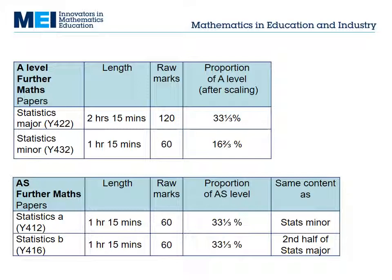This is how the exams work. The minor option can be taught in Year 12 alongside AS Maths. The major option is probably best taught over two years. If you want to enter for AS Further Maths, there's an AS unit with the same content as Statistics Minor, and another one with the same content as the second half of Statistics Major.